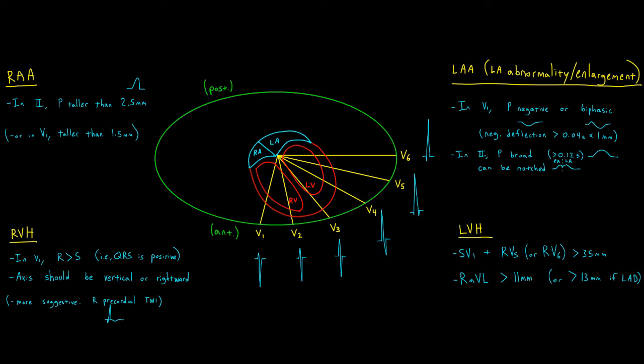Similarly, with a right bundle branch block, the forces become more exaggerated anteriorly in the area of the right ventricle, and so your QRS will already look positive in lead V1. Thus, when you have a right bundle branch block, you can't call something RVH simply because the R is greater than the S in lead V1 with right axis deviation.